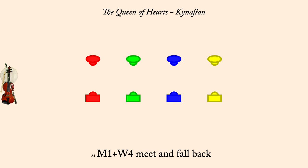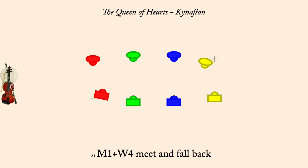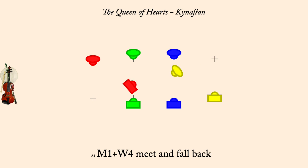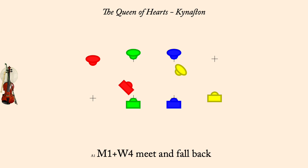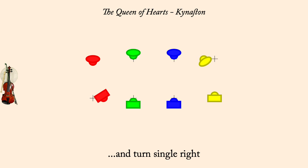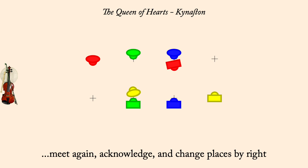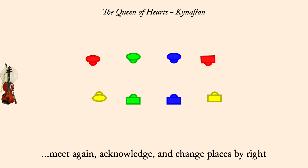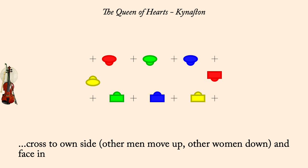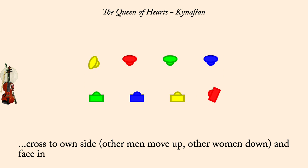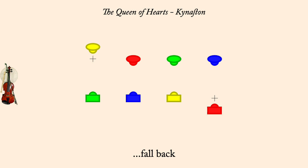Man one, woman four: meet and fall back. And turn single right. Meet again and change by right. Cross to own side, others make room. Fall back. Return to place, others make room.